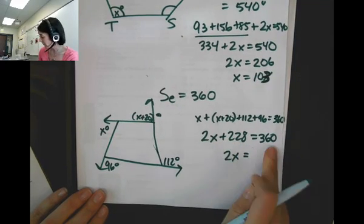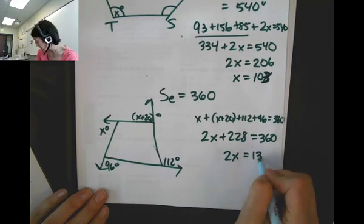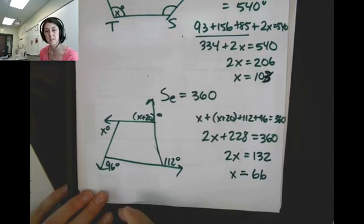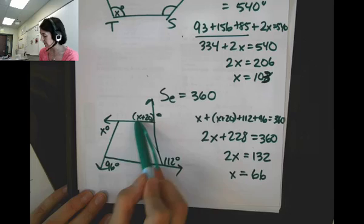2x plus 228 equals 360. Again, I'm doing this work for you because I know you know how to do that. Divide by 2. x equals 66. Not 66 degrees, just 66.